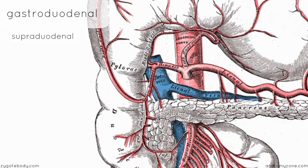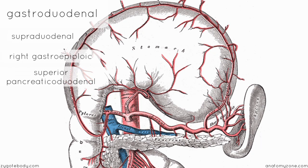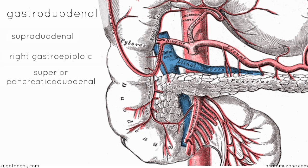The first branch coming off here curves around the greater curvature of the stomach. Since we saw the left gastroepiploic artery coming off the splenic artery, this branch coming off the gastroduodenal artery is the right gastroepiploic artery, and it anastomoses with the left gastroepiploic artery. The next branch of the gastroduodenal artery is the superior pancreaticoduodenal artery — it's quite a mouthful but very descriptive: 'superior' because there's also an inferior one, and 'pancreaticoduodenal' because it supplies the head of the pancreas and also the duodenum.